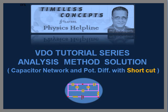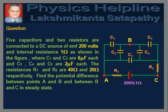In this video tutorial we will discuss a problem on the potential difference in a capacitor network. 5 capacitors and 2 resistors are connected to a DC source of EMF 200 volts and internal resistance 1 ohm as shown in the figure. C1 and C2 are 6 microfarads each, and C3, C4, and C5 are 2 microfarads each. The resistances R1 and R2 are 40 ohms and 20 ohms respectively. Find the potential difference between the points A and B and between the points B and C in steady state.